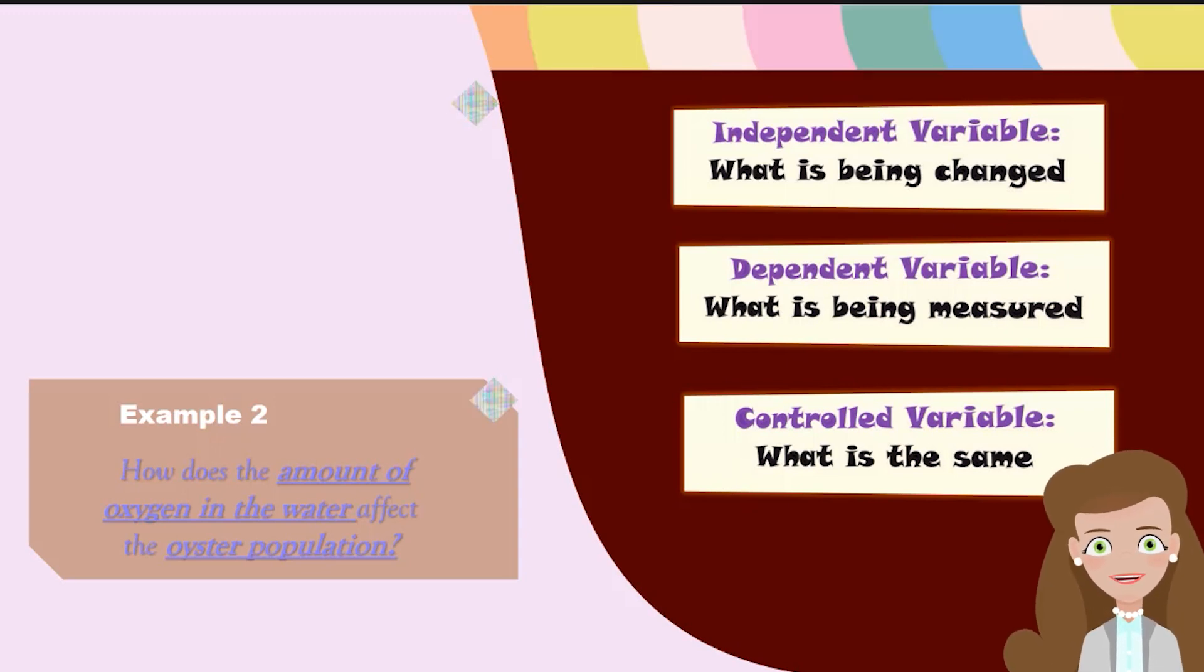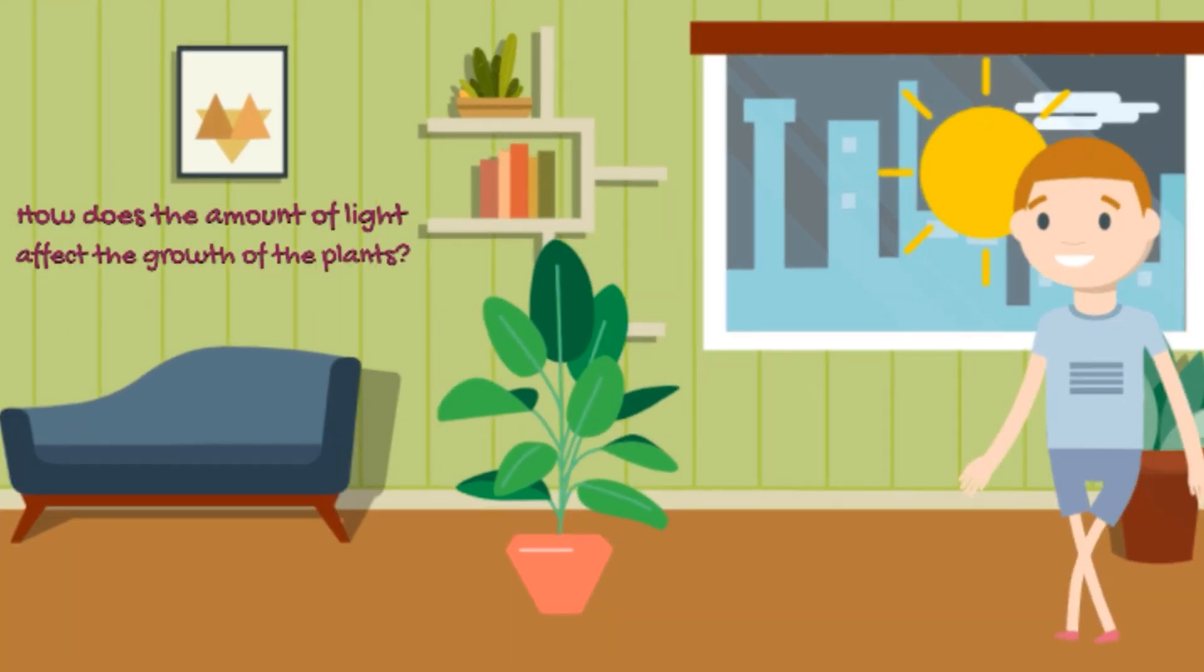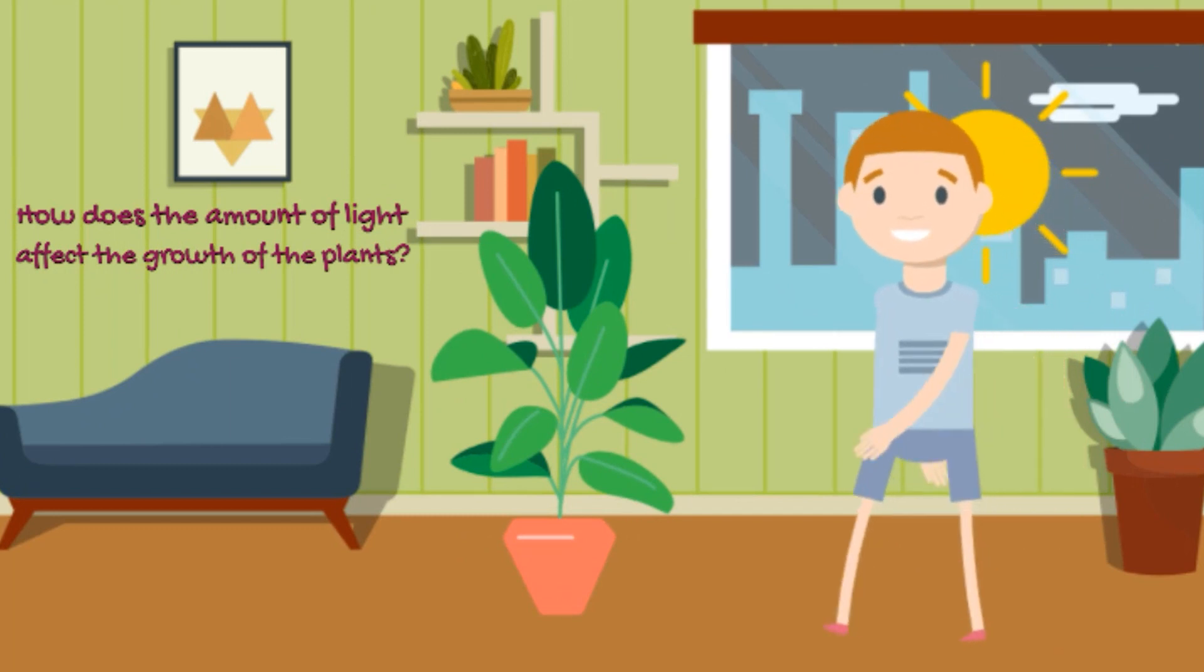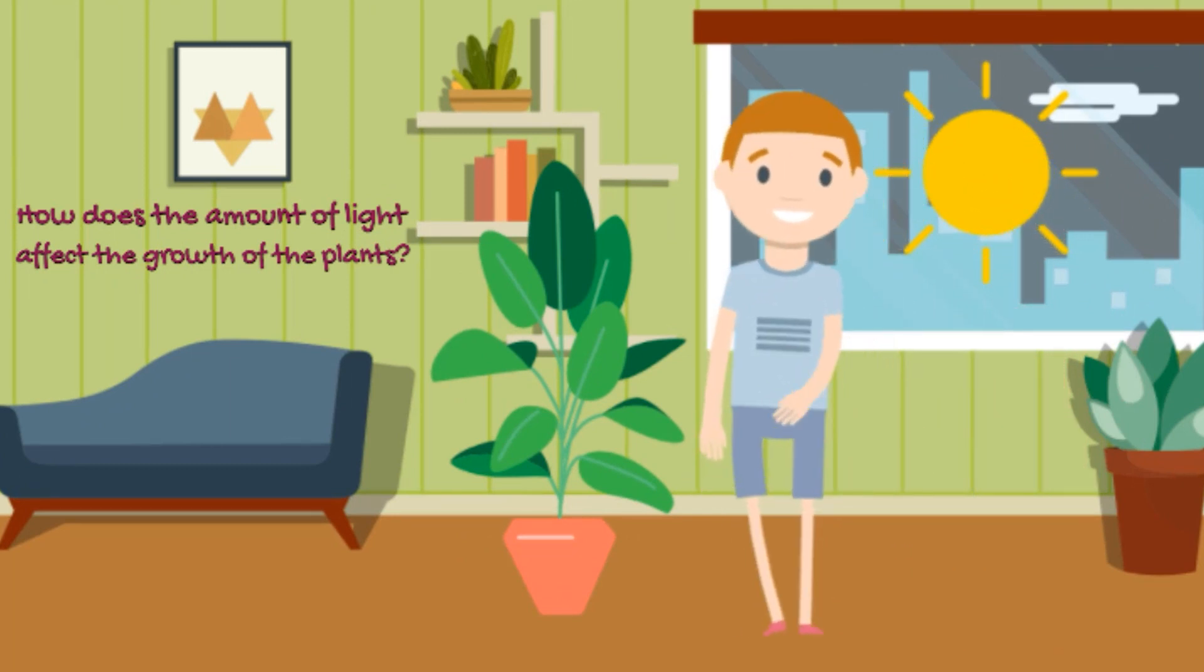How does the amount of light affect the growth of plants? In this example, the amount of light is being changed. So that will be my independent variable.